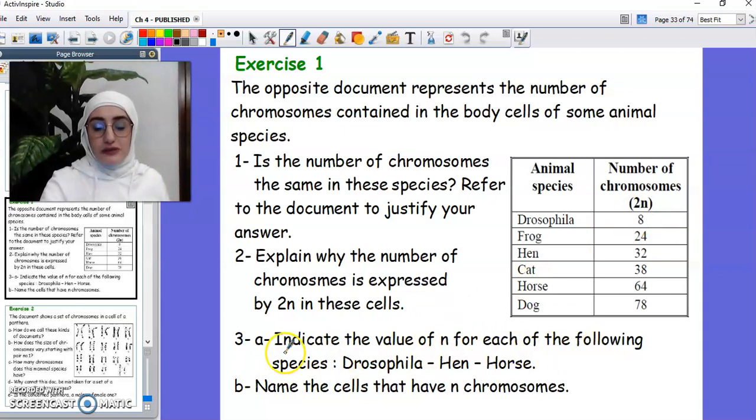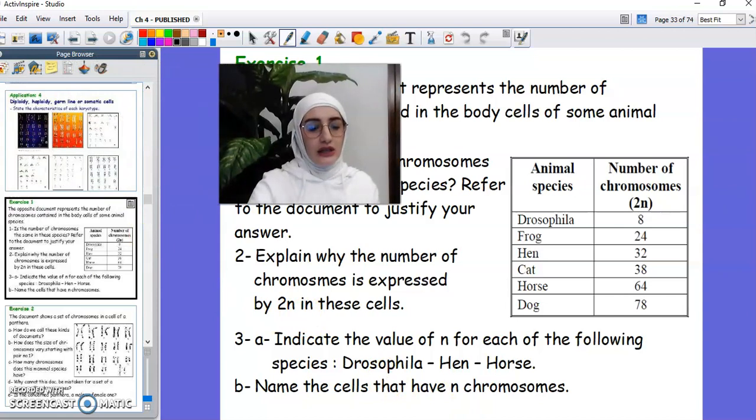Indicate the value of N for each of the following species: Drosophila, Hen, and Horse. Drosophila 2N equals 8, so if 2N equals 8, then N equals, you should be good at math. Is your biology teacher good at math or not? I think I'm good at math. Let's try. 2N equals 8, so N equals 8 over 2 which is 4. See, I told you I'm good at math. The Hen, 2N equals 32, so N equals 32 by 2 which is 16. The Horse, we have 64. 2N equals 64, so N will be 64 by 2, which is 32. Very good at math actually. Name the cells that have N chromosomes. So what do we call the cells in the body that have N chromosomes? These are the haploid cells or the sex cells, the germline cells.